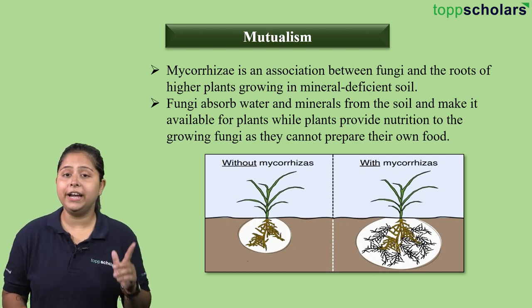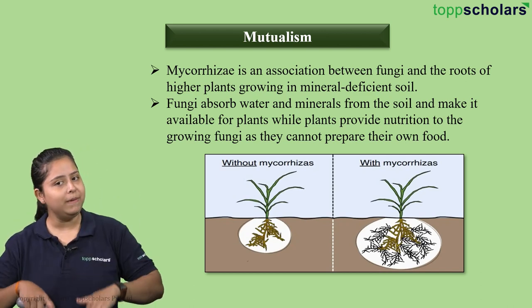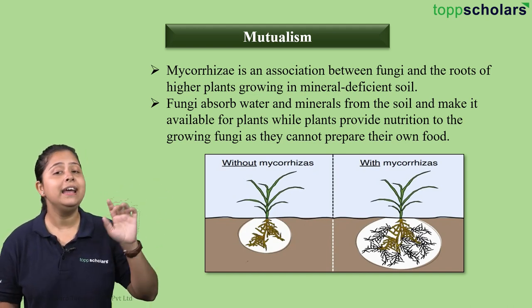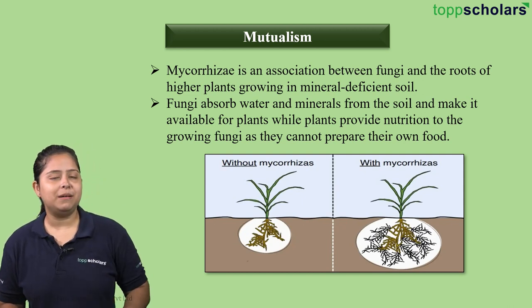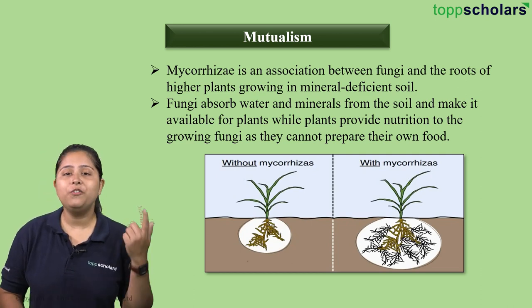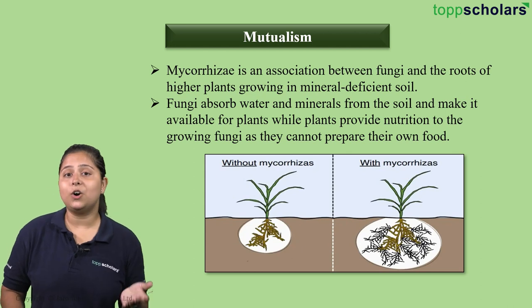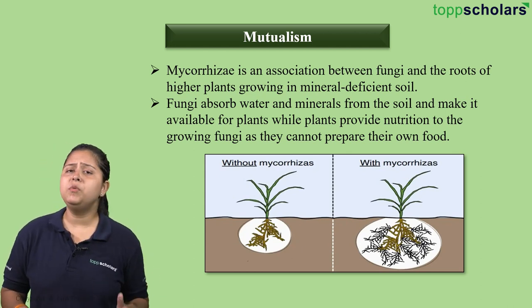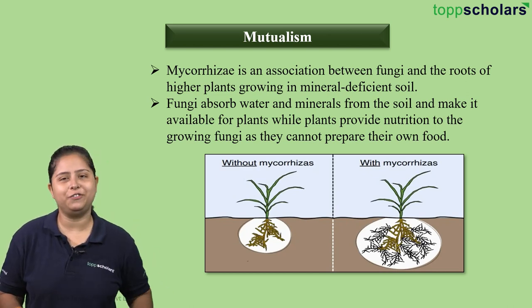As you can see, the soil zone covered without mycorrhizae is very small compared to the zone covered with mycorrhizae. Fungi absorb water and minerals from the soil and make it available for plants, while plants provide nutrition to the fungi since they cannot prepare their own food. Mycorrhizae is therefore a mutualistic interaction. In mutualism we have seen: fig tree and wasp, lichen, and mycorrhizae.